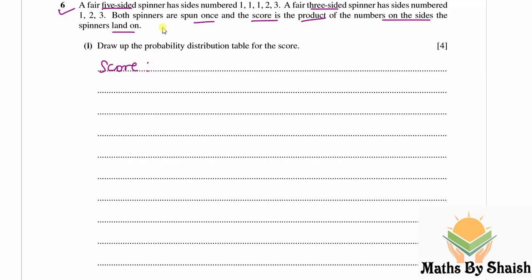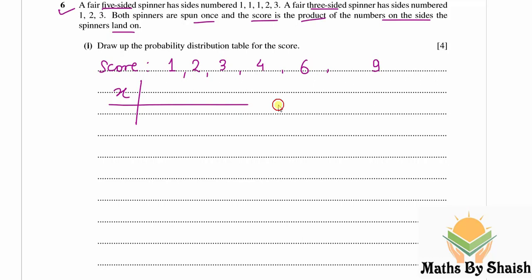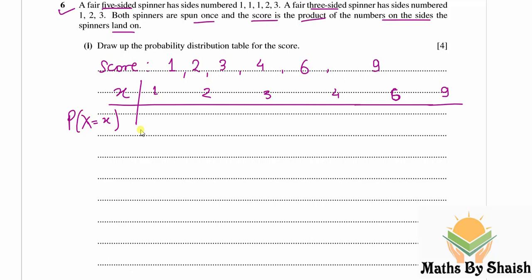The score is the product of the two numbers. The minimum is 1×1=1 and the maximum is 3×3=9. In between: 1×2=2, 1×3=3, 2×2=4, 2×3=6, and 3×3=9. So the possible scores are 1, 2, 3, 4, 6, and 9. Note that 5 is not possible. For the distribution table we take X as 1, 2, 3, 4, 6, and 9.